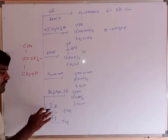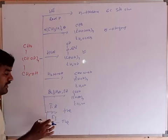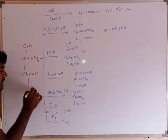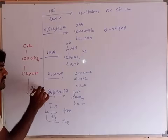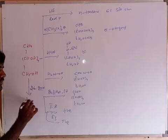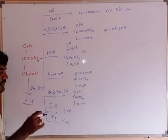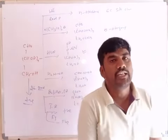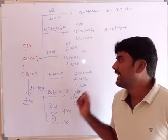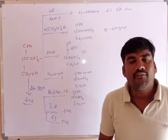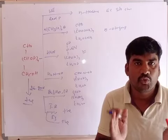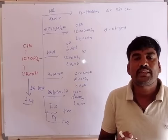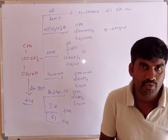Note that Tollens' reagent is specific to aldehydes only, not ketones. Glucose also gives a positive 2,4-DNP test, since 2,4-DNP is positive for both aldehydes and ketones. But Tollens' reagent and Fehling's solution are specific only to aldehyde groups. These tests collectively indicate the presence of the open chain structure of glucose.